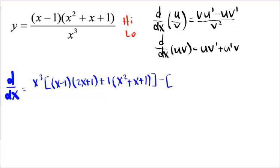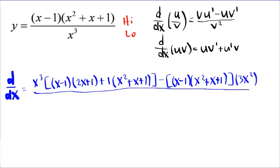Minus, and then we take the top times the derivative of the bottom. And we're going to put all of this over the bottom squared. So there's your setup.